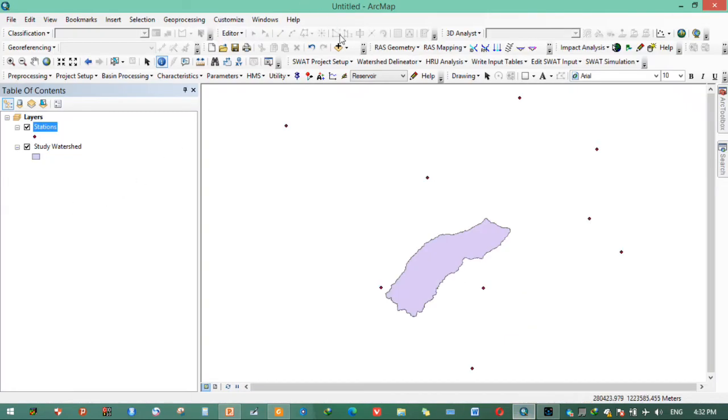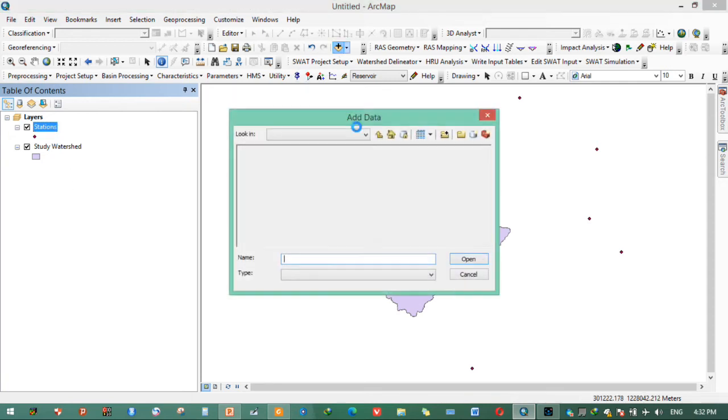In doing such kind of computation, we need to prepare data. For determining R factor, we need to prepare station data and watershed map. We need to prepare station points. Station data is point feature. The other is watershed is polygon feature. We need to prepare those two data types.